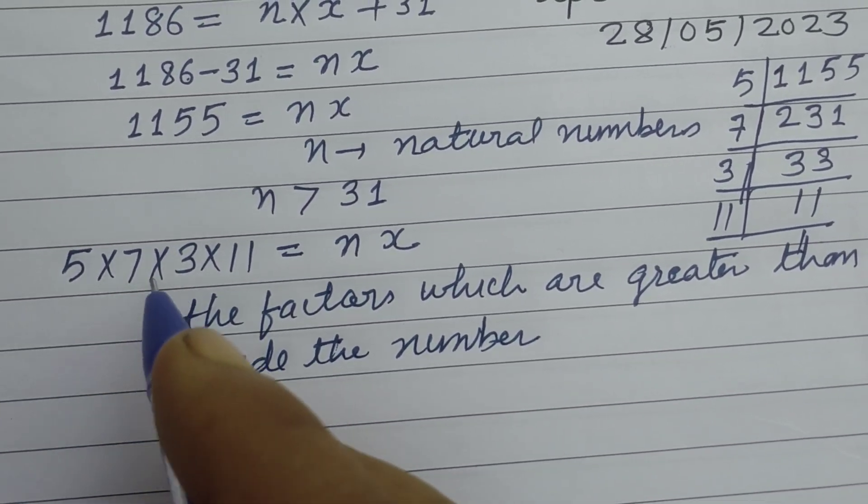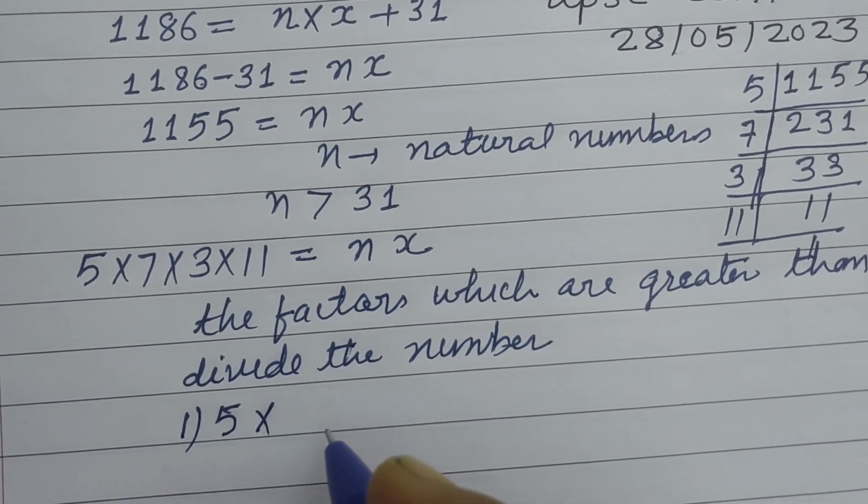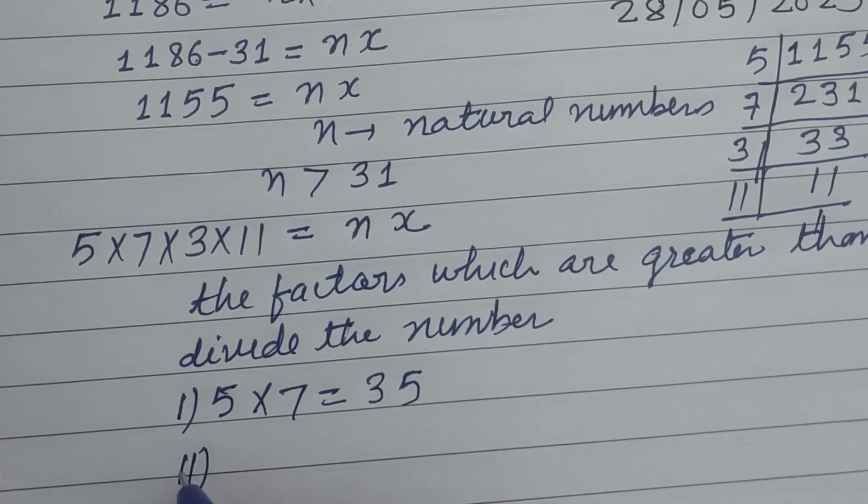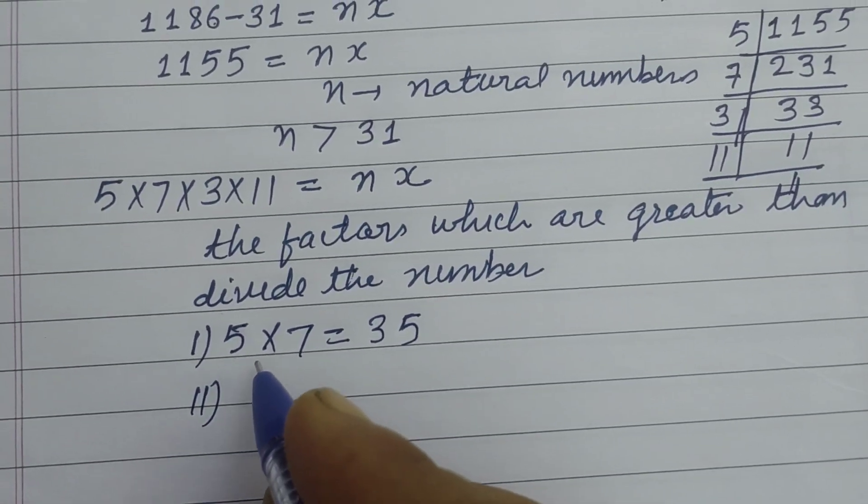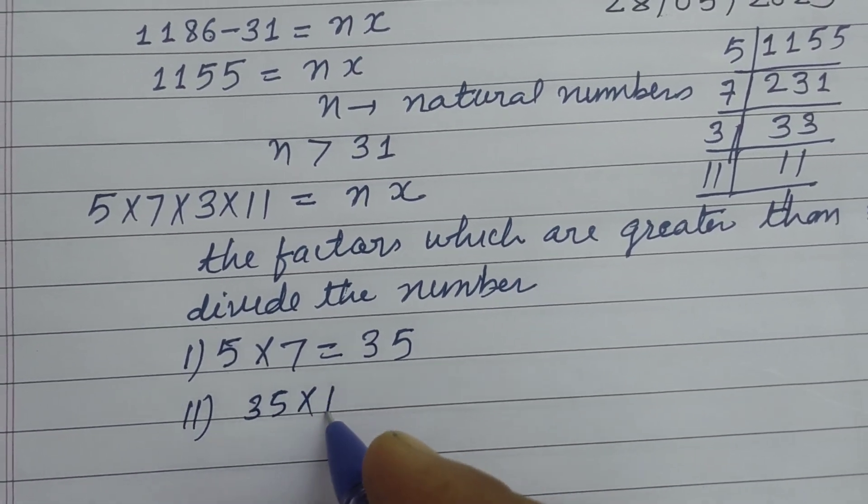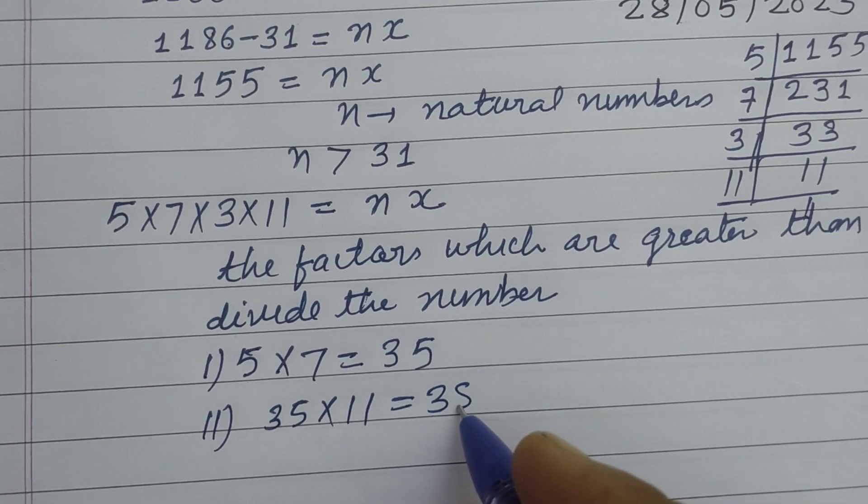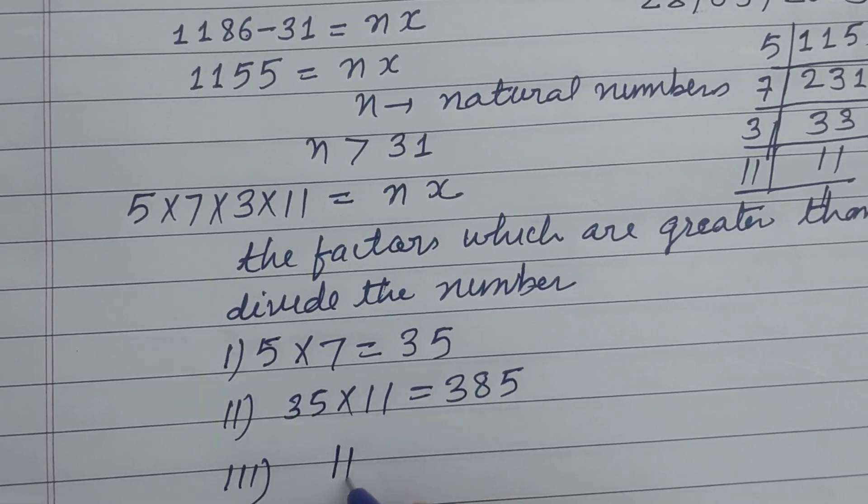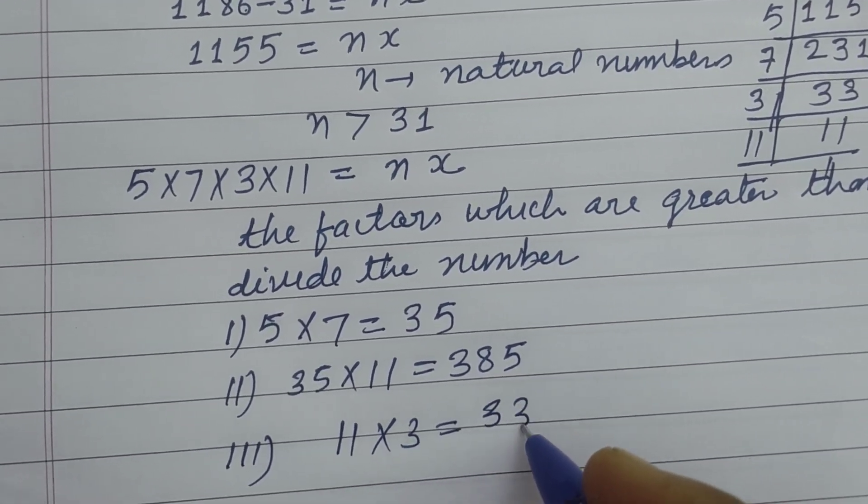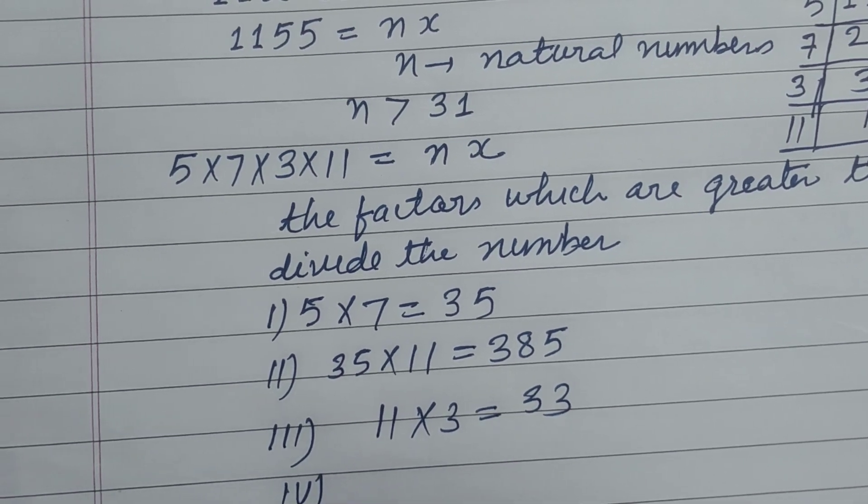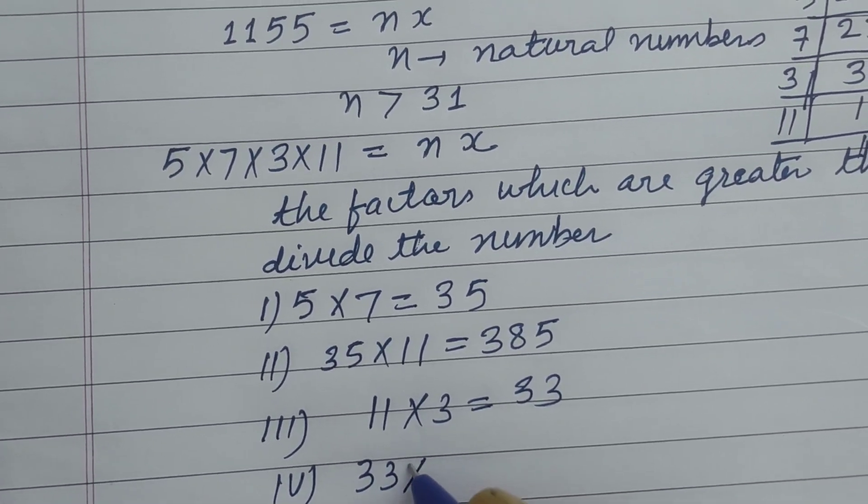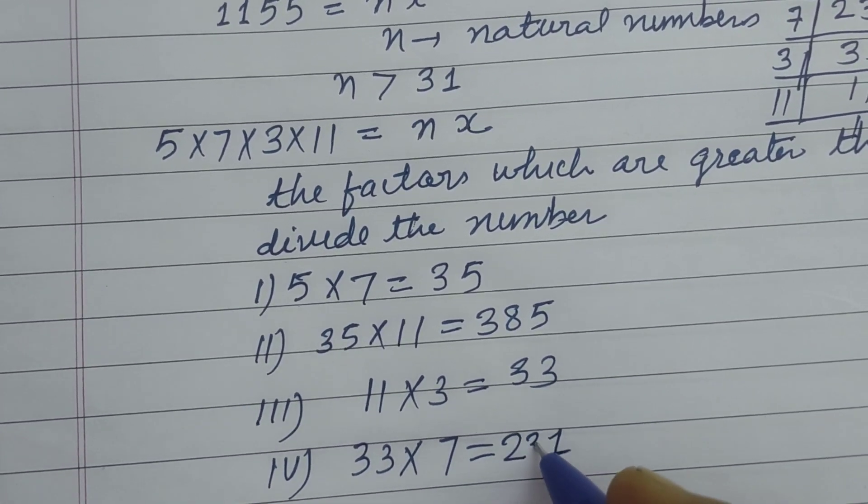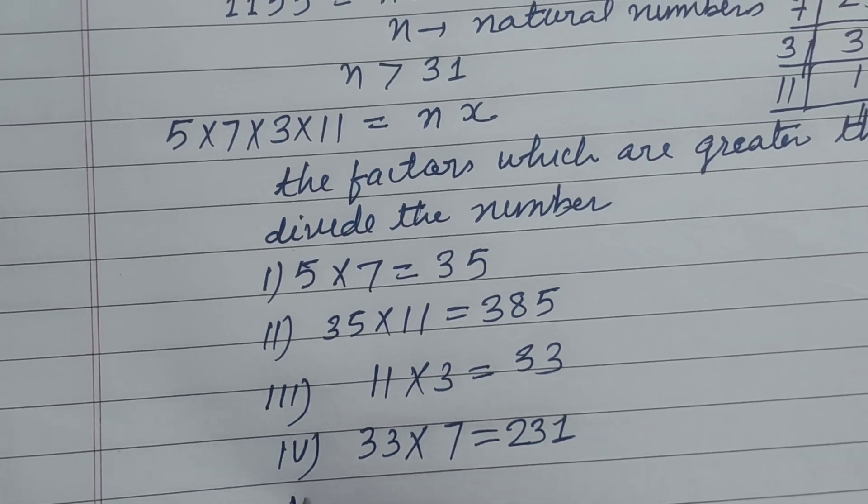First is 5 × 7, so this is 35. Second is 35 × 11, this is 385. Third is 11 × 3, so this is 33, which is also greater than 31. Fourth is 33 × 7: 7 × 3 is 21, 7 × 3 is 21, this is 231.